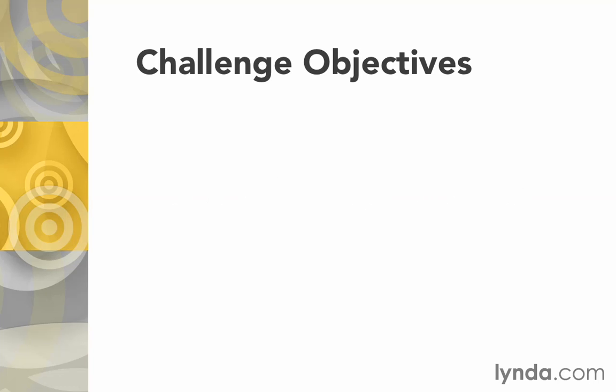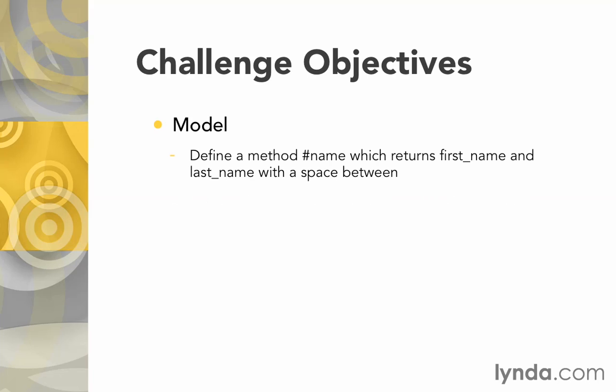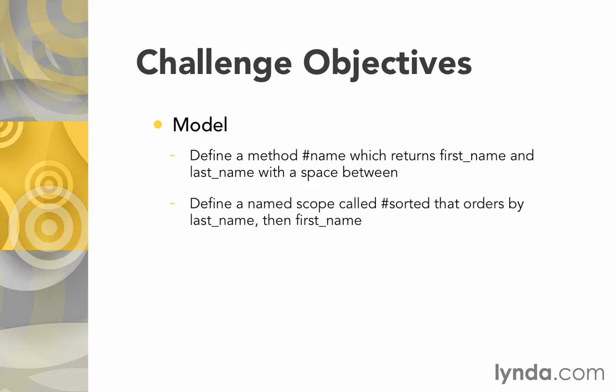First, I want you to go into the model for admin user and do two things there. Define a new method called 'name', which will simply return the first name and the last name of the admin user with a space in between. Then, define a named scope called 'sorted' that's going to sort the admin users by last name and then by first name.